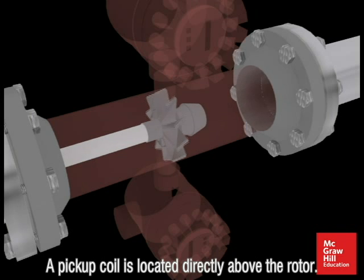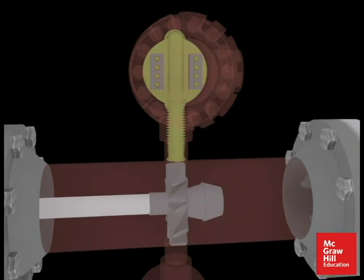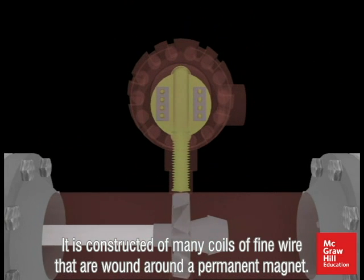A pickup coil is located directly above the rotor and is completely isolated from the fluid. It is constructed of many coils of fine wire that are wound around a permanent magnet.